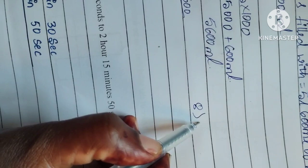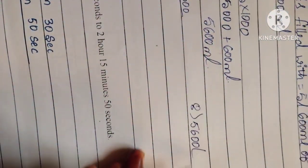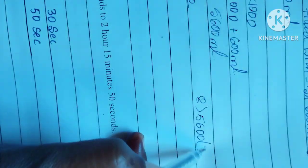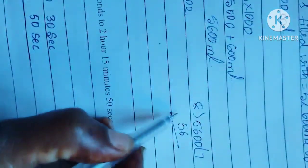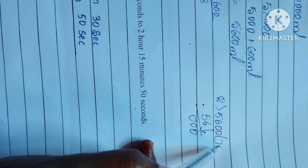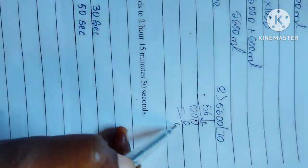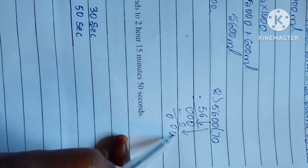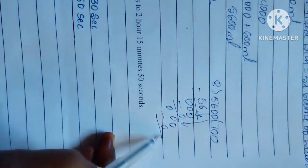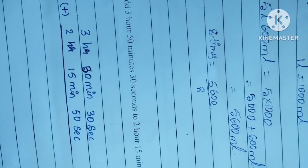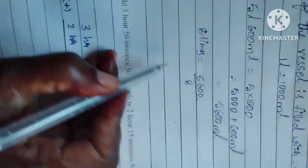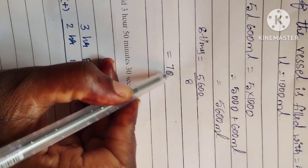Now perform the division: 5600 divided by 8. 8 goes into 56 seven times giving 56, subtract to get 0, bring down 0, 8 zeros are 0, bring down 0 again, 8 zeros are 0. The answer is 700 ml of water.